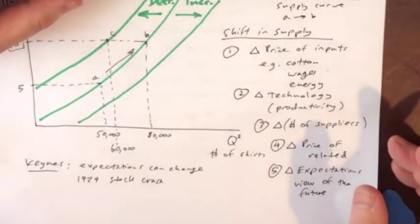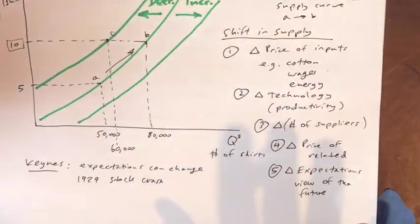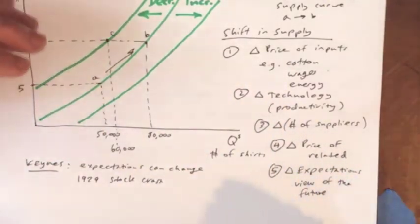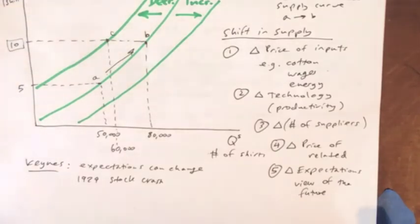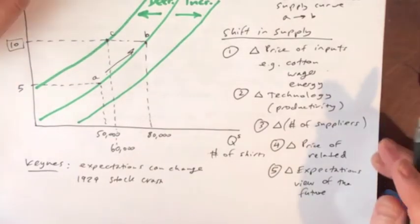The example that Keynes used was the 1929 stock market crash that affected all kinds of businesses' expectations. What they thought before the crash, they thought okay this is a good plan, we're going to invest in this factory. After the crash they said no, no, no, no, no, no. Forget that. Don't do it. Because our view of the future has now changed. We see the future as a lot less rosy than we did before the stock market crash.